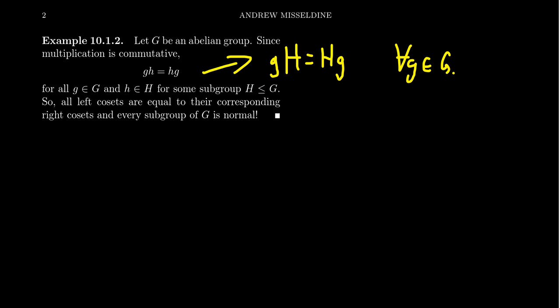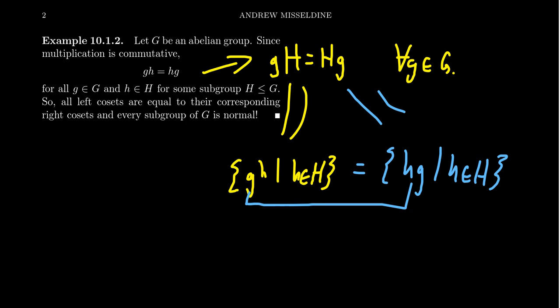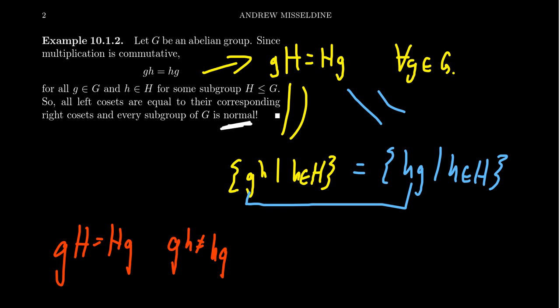As a set, gH looks like all the g times little h as h ranges over capital H, and the right coset Hg looks like h times g as h ranges over the subgroup H. Because these are elementwise the same, you see the sets are the same. The important distinction is that the sets could be equal even when the elements don't commute — we could have gH equals Hg as sets even though elementwise g times h doesn't equal h times g. But because we have commutation at the element level, we'll have commutation at the coset level. So every subgroup of an abelian group is in fact normal.